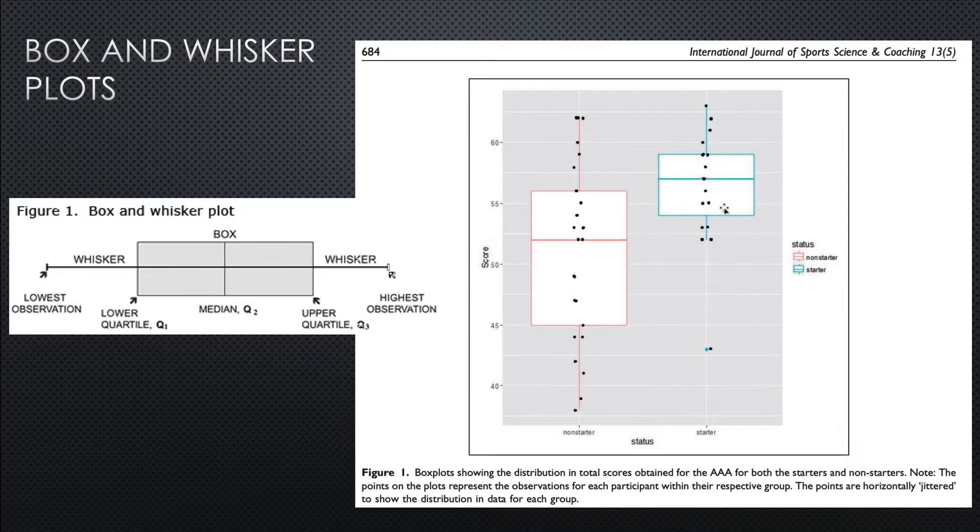So we can see how this tells us a few things. It tells us the median scores were definitely higher for the starters. And it tells us that the top 50% of starters, so that's everybody above this line, the top 50% of starters scored better than the top 25% of the non-starters.